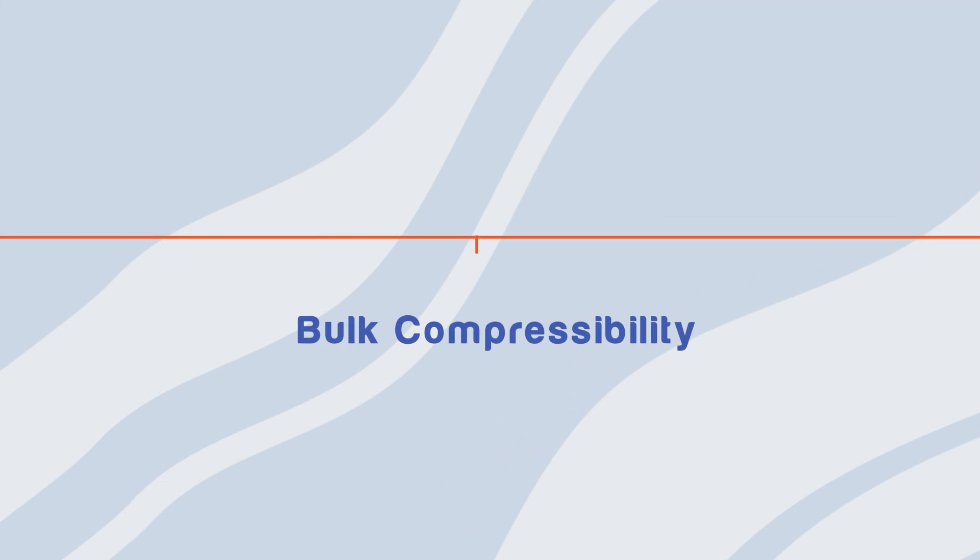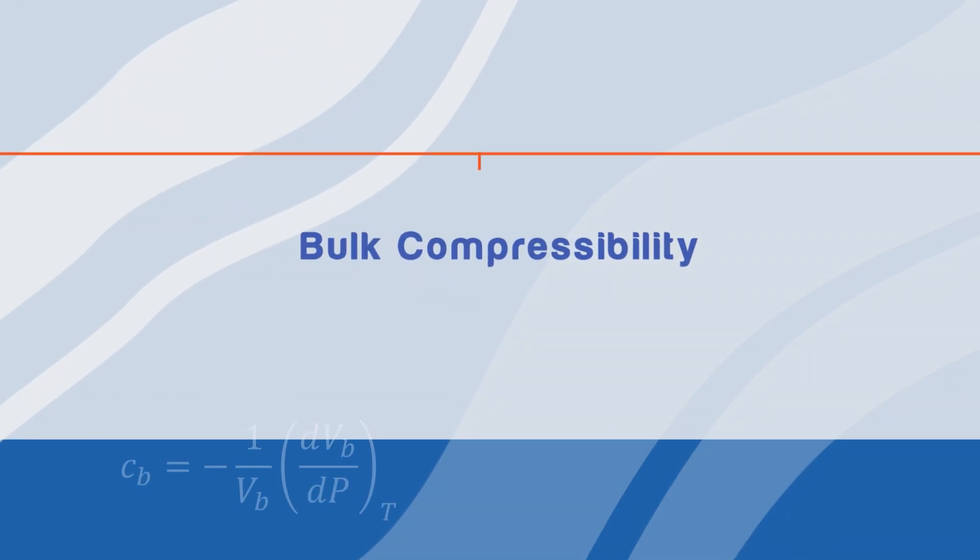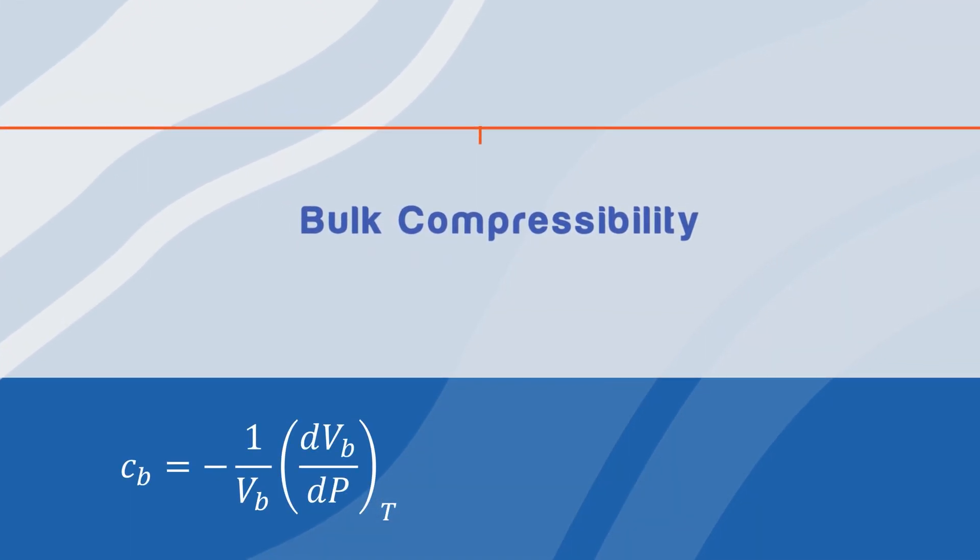Bulk compressibility is the fractional change in bulk volume per unit change in pressure. Its equation is shown here, where cb is the bulk compressibility, vb is the initial bulk volume, and dvb over dp is the change in bulk volume over change in pressure.